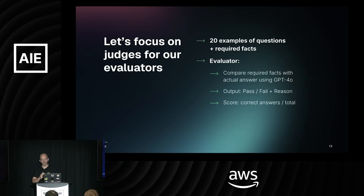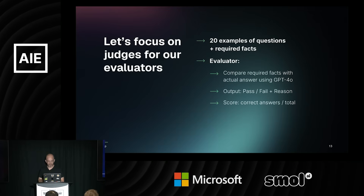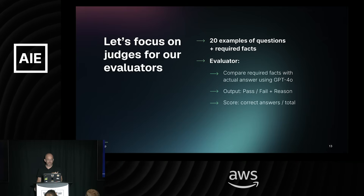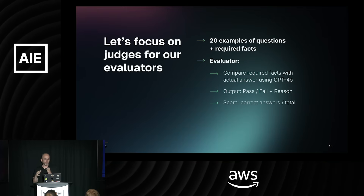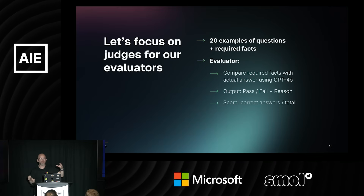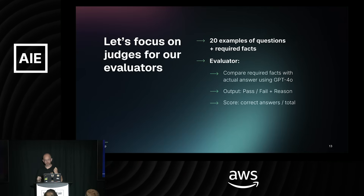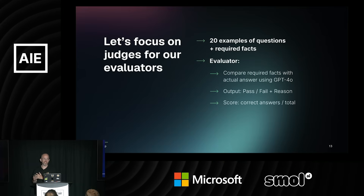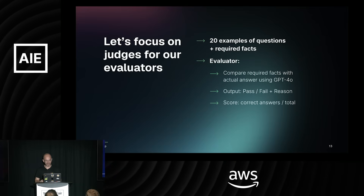I'm going to do a simple LLM as a judge. I'll take 20 example questions I've created and for each question I'll write what I expect the answer to contain — three facts the RAG-generated answer should have. The evaluator takes the answer from the RAG pipeline and checks whether those facts appear in it. Per each fact we get pass or fail — a Boolean response — plus a reason if it failed, explaining why the judge thinks the fact doesn't appear in the answer. Then we get a numerical score summarizing all facts across all examples: three facts times 20 examples equals 60 total facts to evaluate.